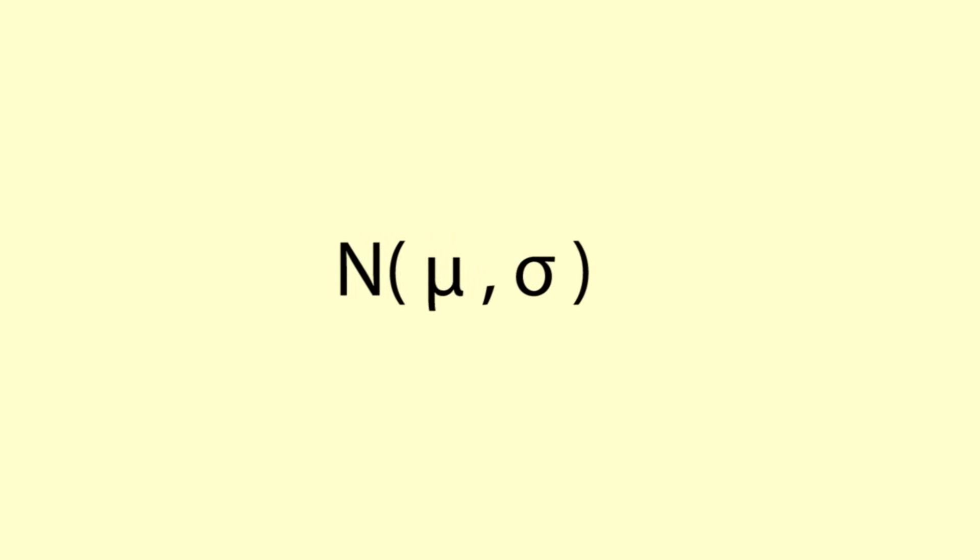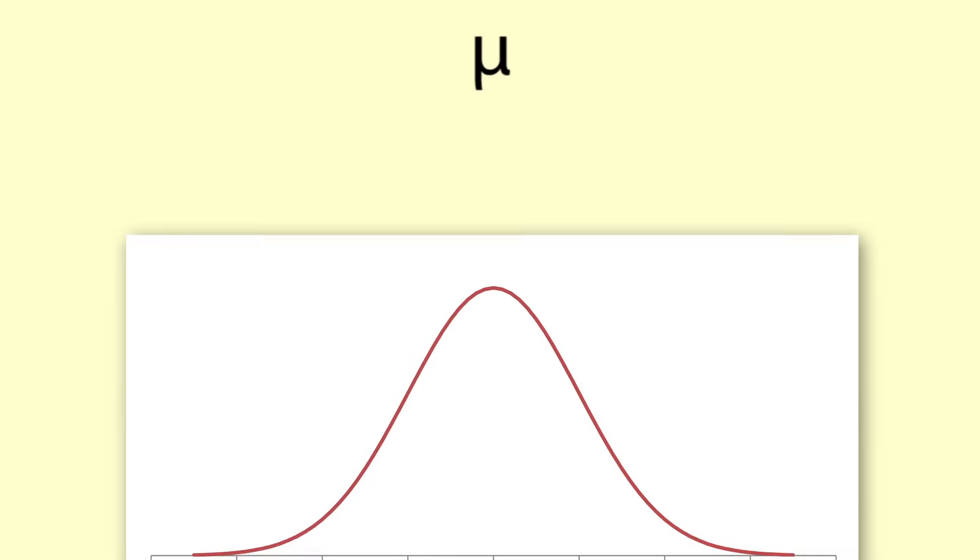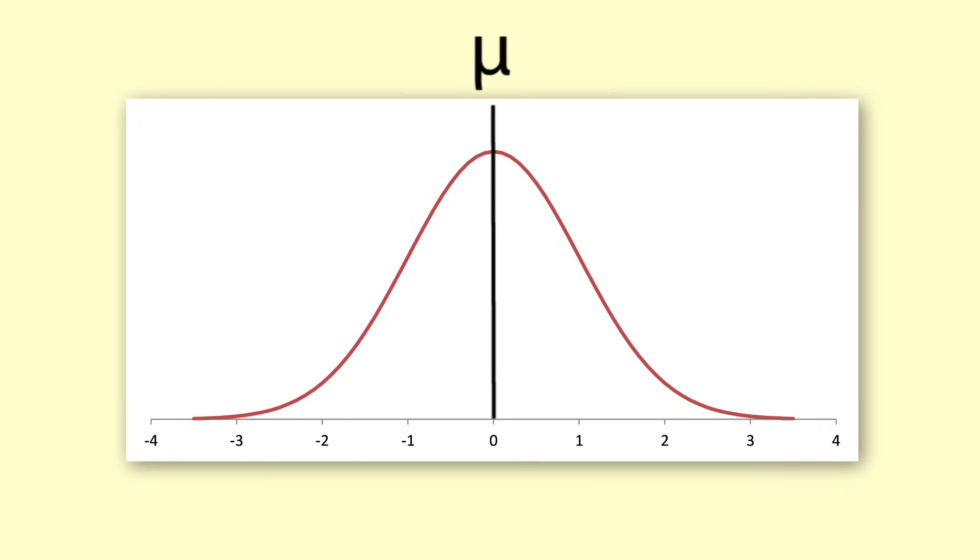Each normal distribution is defined by the mean and the standard deviation. The mean is also the median and tells us the midpoint of the distribution. It is the value around which all the data values are centred.